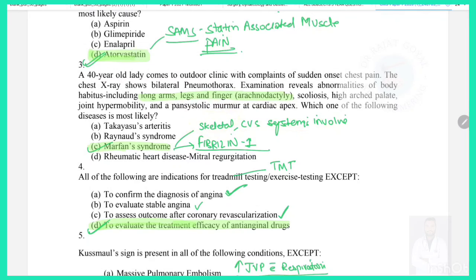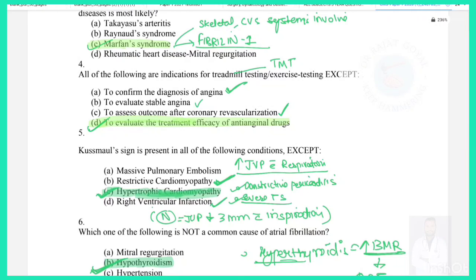Question 4: All of the following are indications for the treadmill test (TMT) / exercise testing except — TMT is used to confirm the diagnosis of angina (correct), to evaluate stable angina (correct), and to assess outcome after coronary revascularization (correct). However, TMT is not used to assess treatment efficacy of anti-anginal drugs, so answer 4 is the exception.